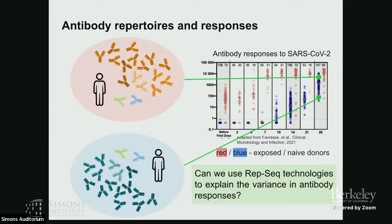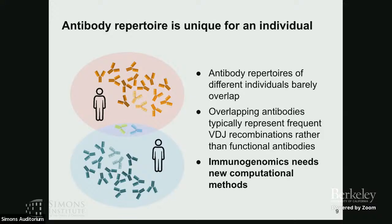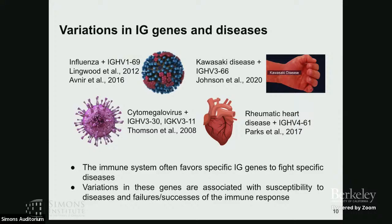We view antibody repertoires as collections of sequences. The simplest approach would be to look at overlap between sets and find shared sequences, but unfortunately this does not always work. For many diseases we do not see such public antibodies at all, and even if we do, they might represent just frequently occurring VDJ combinations and not necessarily be functional or important antibodies. We therefore need to understand other representative features.